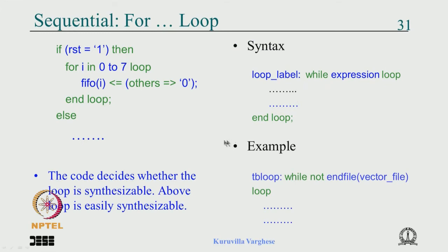The sequential loop syntax is: for i in 0 to 7 loop ... end loop, and you write statements inside — instead of generate/end generate. An example: if reset is 1, for i in 0 to 7 loop, FIFO(i) <= (others => '0'), end loop. This is quite synthesizable: each FIFO location is initialized to 0, with maybe 8-bit locations and 256 or 2K entries.